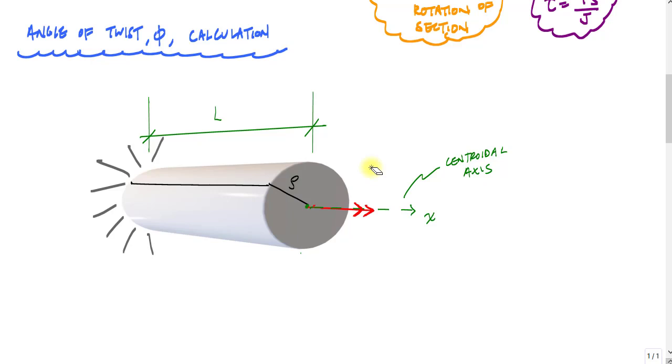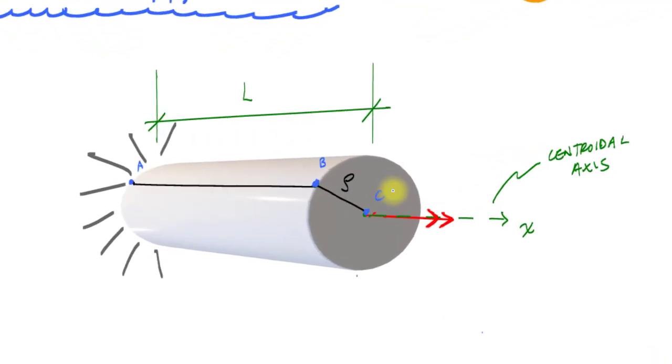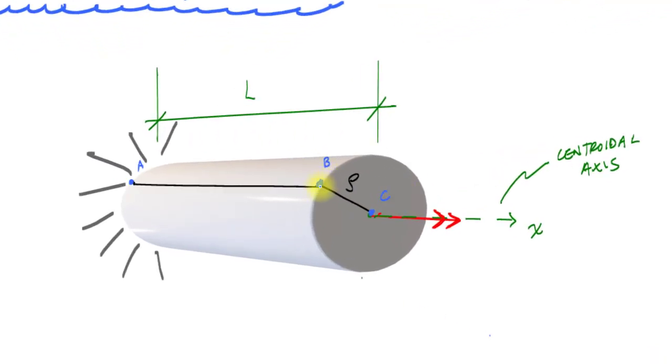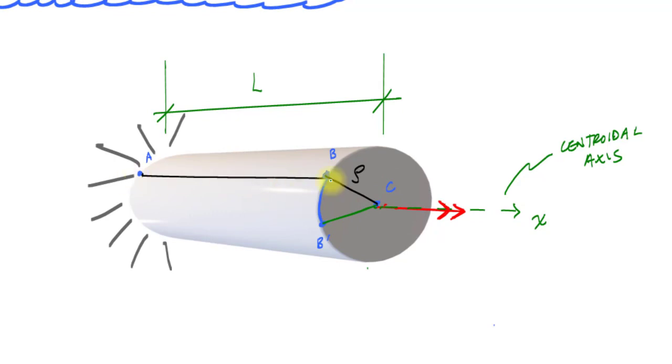That torsion causes the end of the rod to rotate. And if we call this like point A at the fixed end of the rod, we'll call this point B. Here is point C like this. And then when I apply that external torque, point B is going to rotate down to here. We'll call that B prime. It rotates this distance. That radial arm will rotate to here. And point A will stay where it's at. But this longitudinal line AB will deform like this.